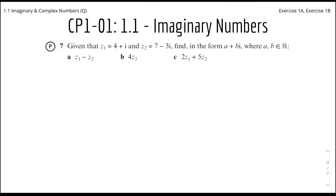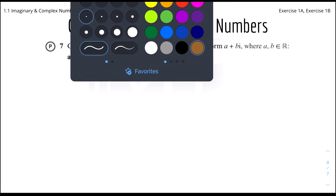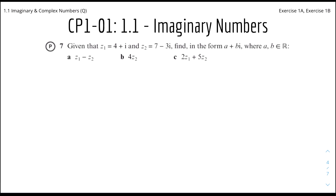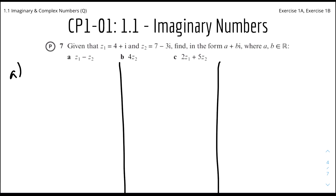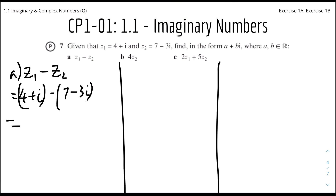Question 7: given z1 equals 4 plus i and z2 equals 7 minus 3i, find in the required form. For part 1, z1 minus z2: we have (4 plus i) minus (7 minus 3i). It's very important to put a bracket over z2; otherwise you might write minus 7 minus 3i, but it's actually minus 7 plus 3i because it's a minus minus. So it's i plus 3i, which gives 4i. The answer is minus 3 plus 4i.